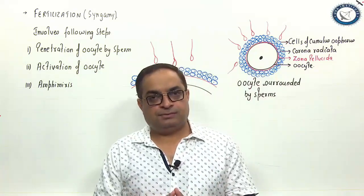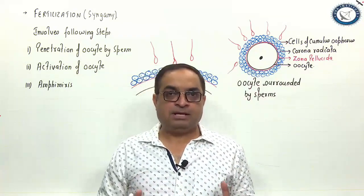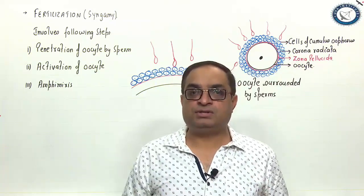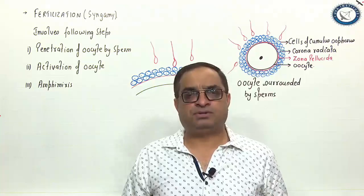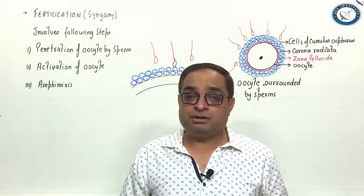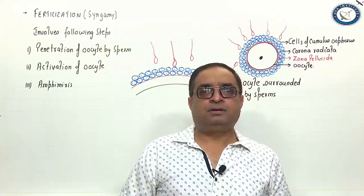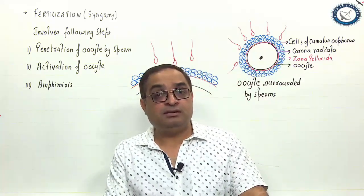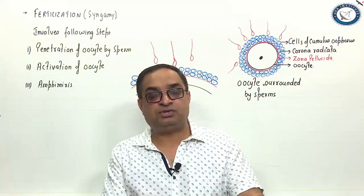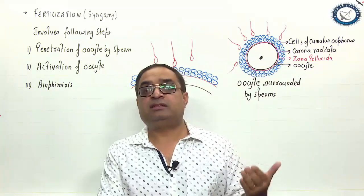During sexual intercourse or copulation, the seminal fluid is deposited in the vagina. Millions of sperms are deposited in vagina. Out of those millions of sperms, only 200 to 250 sperms are capable of reaching near the oocyte, finally reaching the oocyte waiting in the fallopian tube.